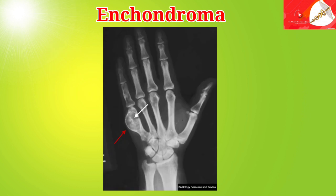In this radiograph, you can see a solitary expansile lytic lesion of the fifth metacarpal containing amorphous matrix calcification. These are characteristics of enchondroma, and there is no pathological fracture.